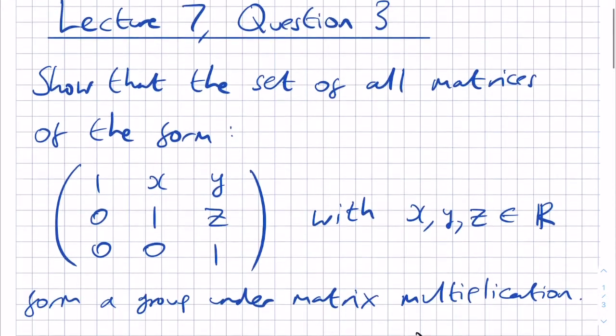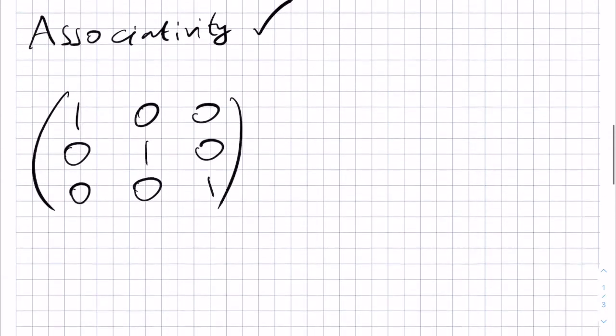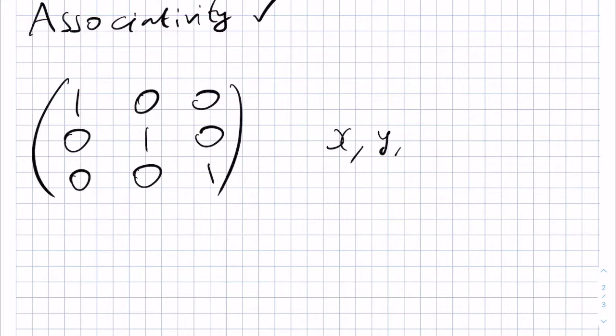This is a matrix of the desired form, in the Heisenberg group, if we set X, Y, and Z to all be 0. Indeed, therefore, we have an identity, as we require for a group.